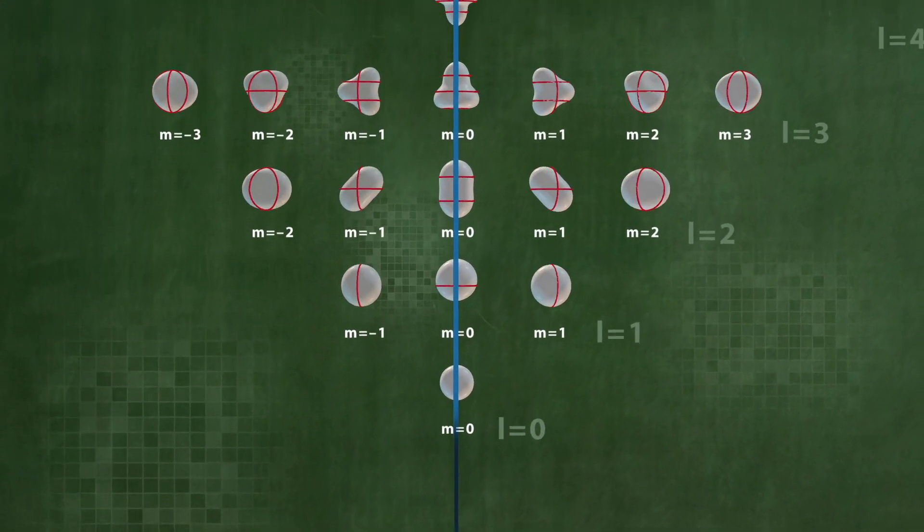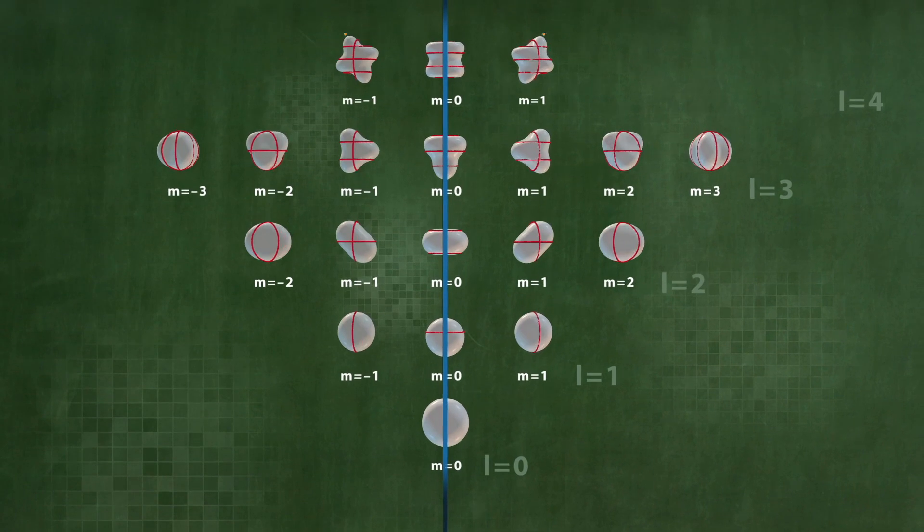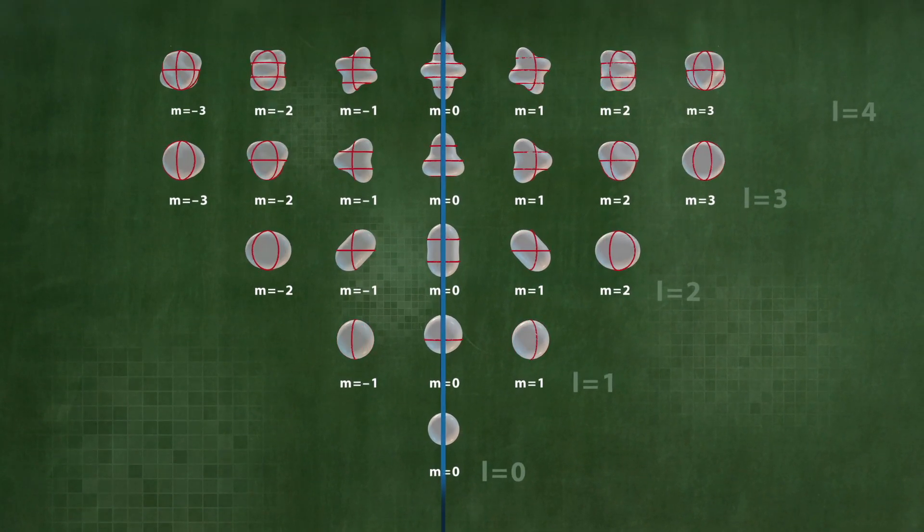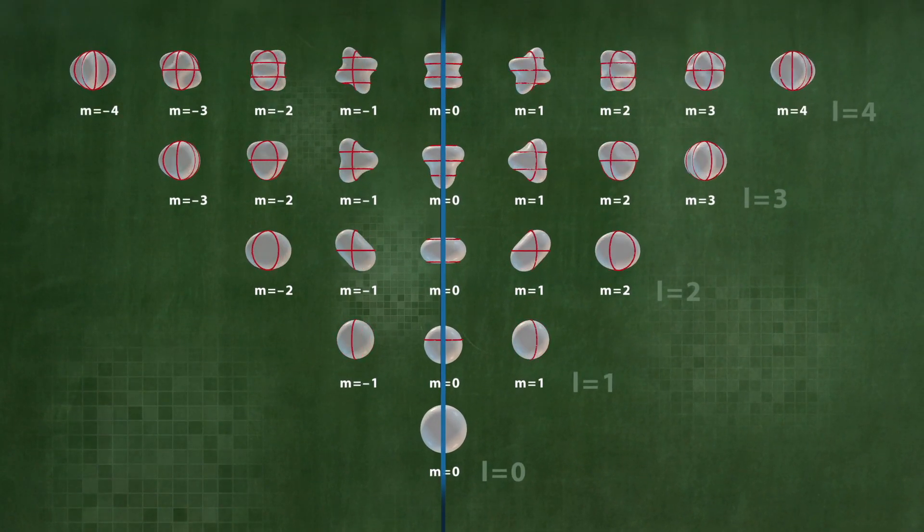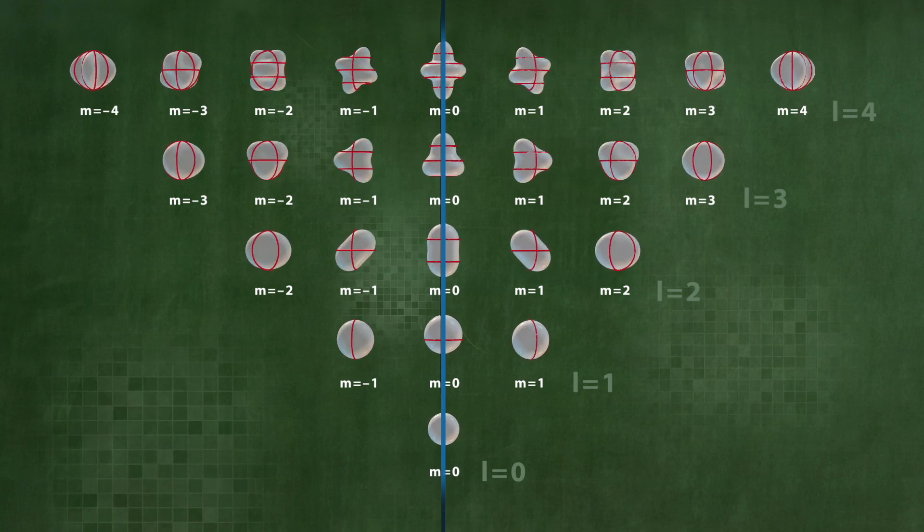We start from the most symmetric eigenstates of the dz operator on the mirror plane. We can then obtain all other eigenstates by applying the nodal rotation operators.